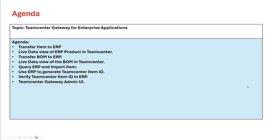Here is the agenda for today's webinar. We'll see how we can transfer items and BOMs to the ERP system. You'll also see the live data view of ERP product and BOM within Teamcenter itself. Then we'll see how we can query the ERP system and import items into Teamcenter. We'll use the ERP system to generate Teamcenter item IDs and verify that the Teamcenter item ID and ERP ID are the same. Lastly, we'll go over the Teamcenter Gateway admin UI, which is used for monitoring all the transactions between the ERP system and Teamcenter.